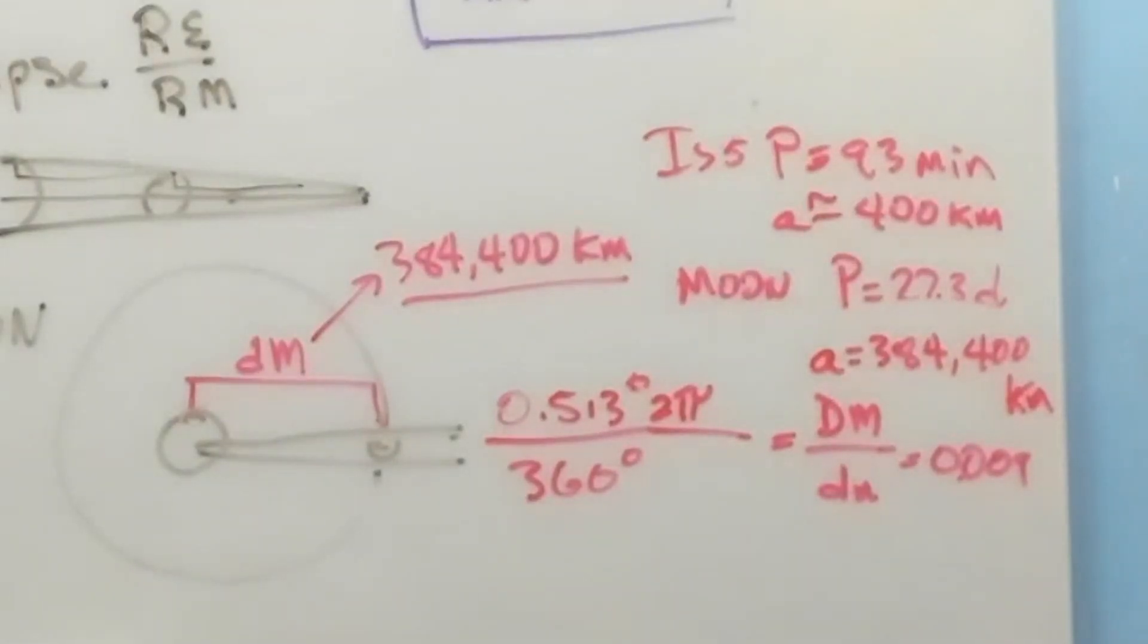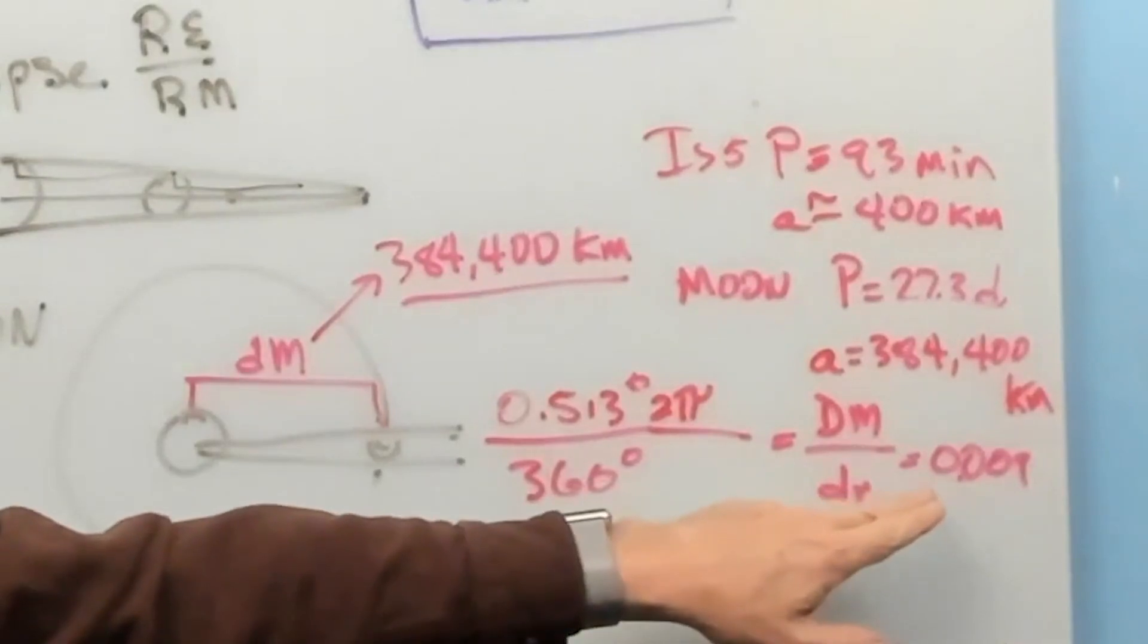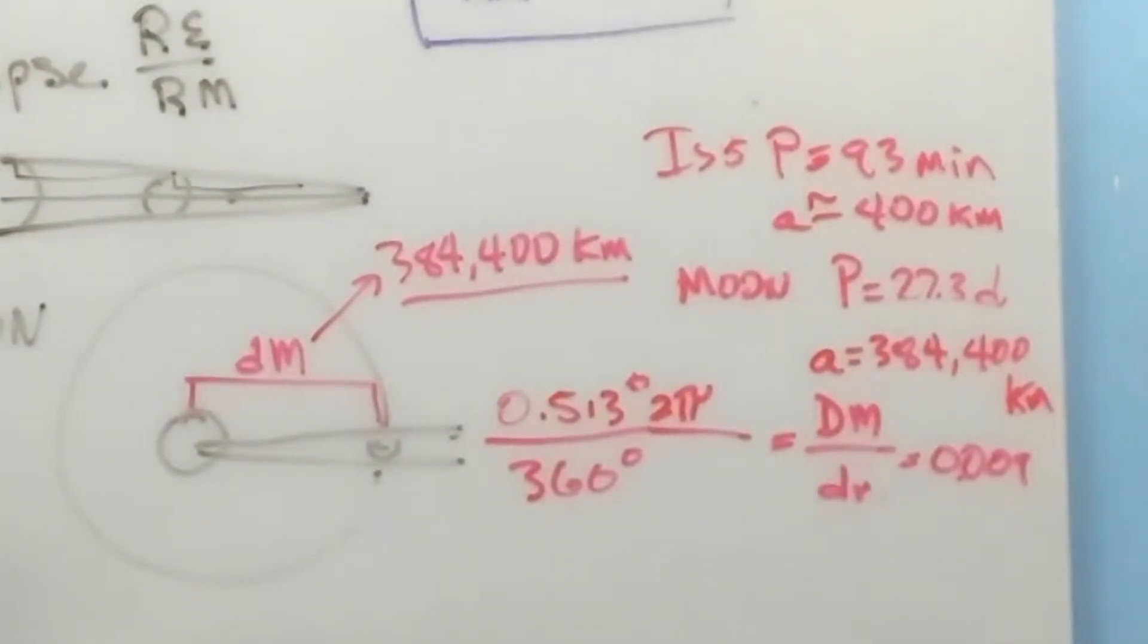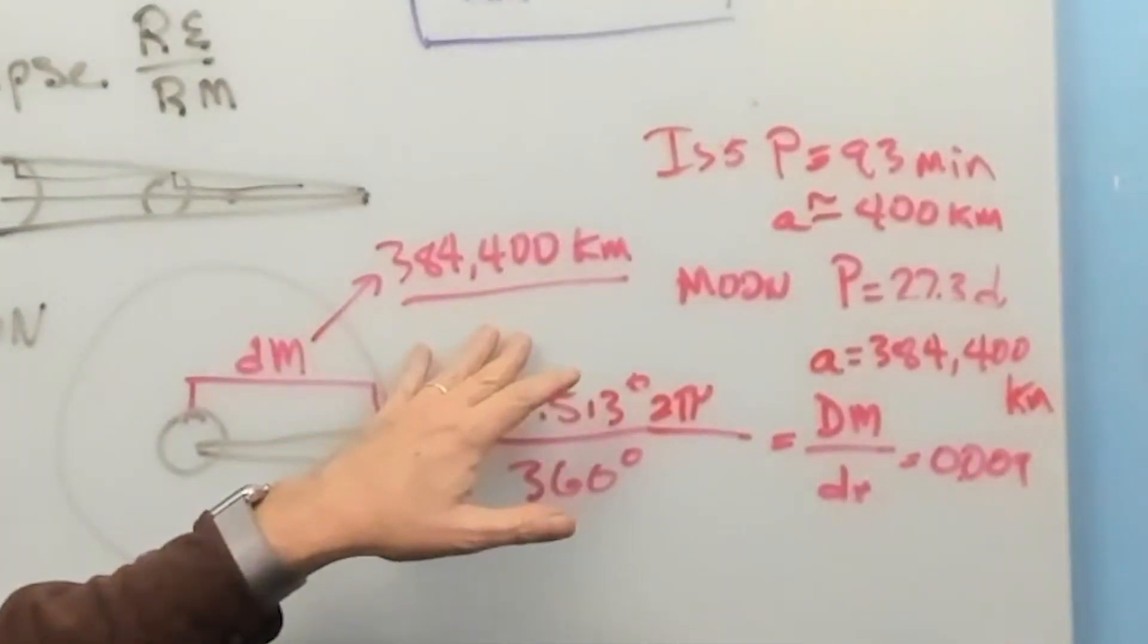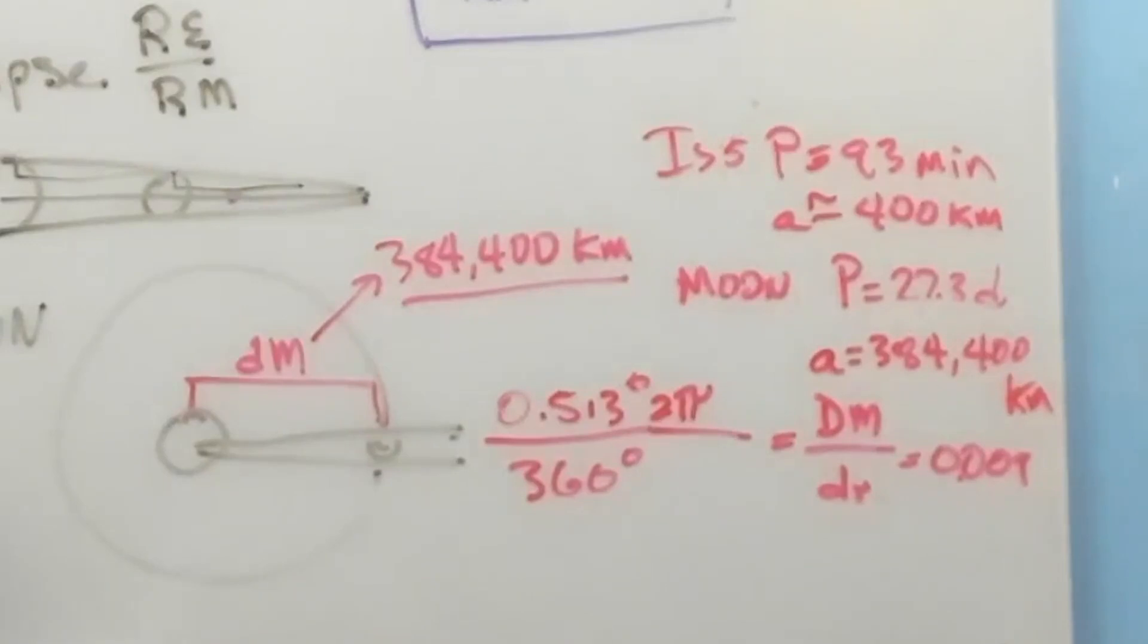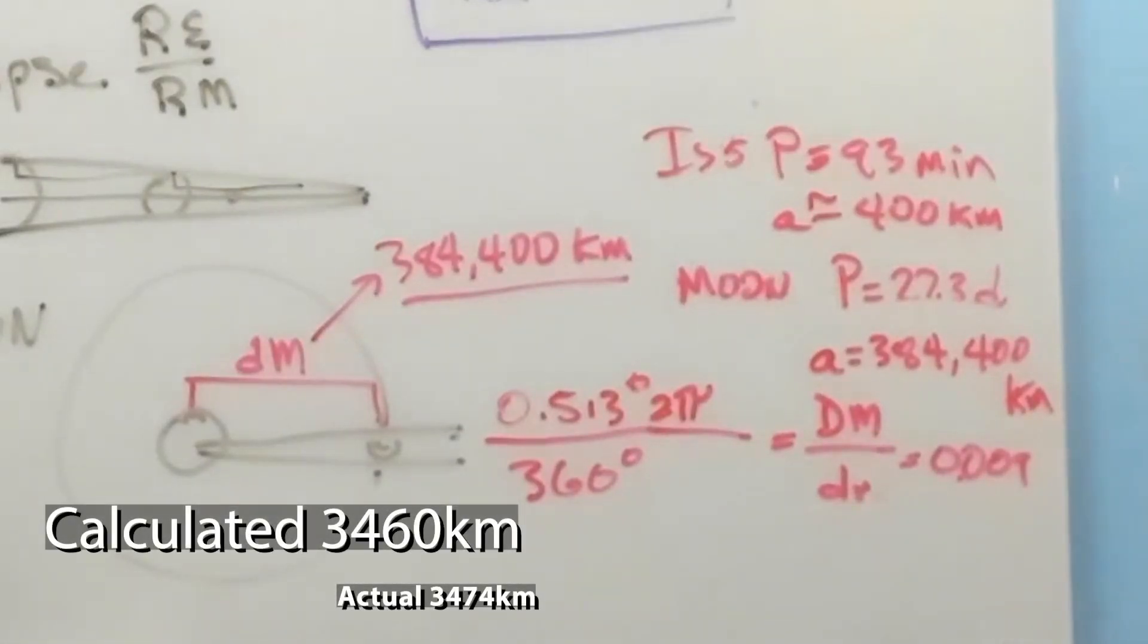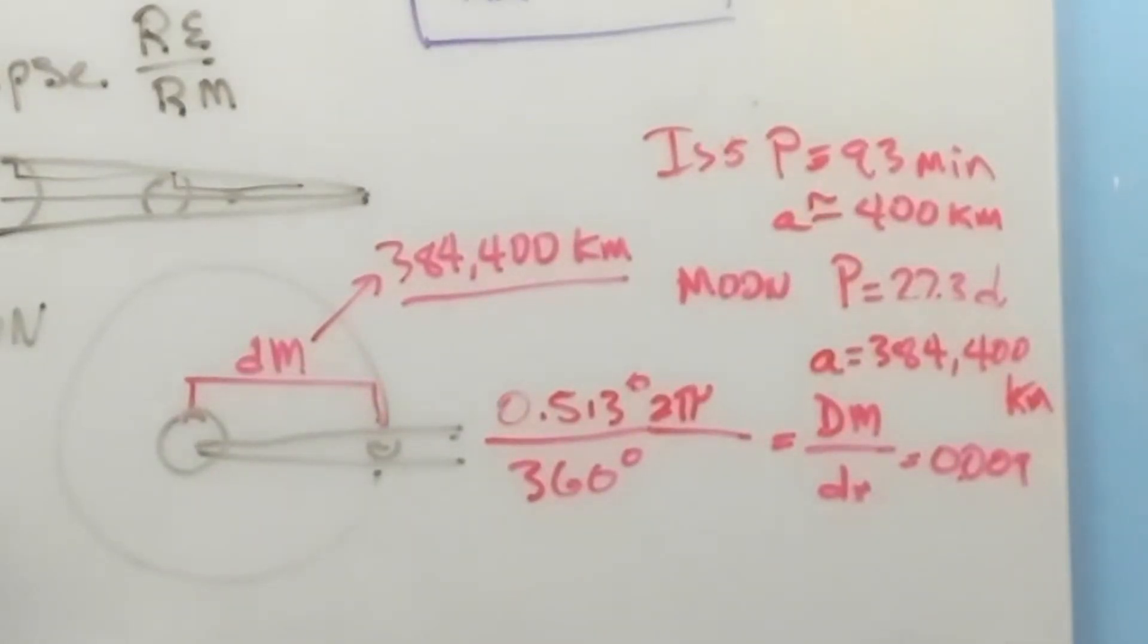So, if we can figure out the distance from the Earth to the Moon and multiply it by 0.009, we can come up with the diameter of the Moon. Let's go ahead and do that. Here's the distance from the Earth to the Moon. We multiply that by 0.009 and we come up with the diameter of the Moon of 3460 kilometers.